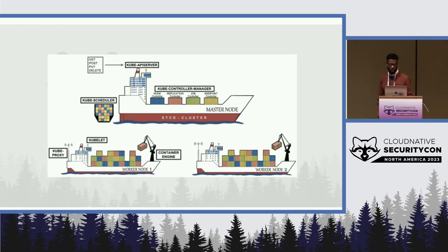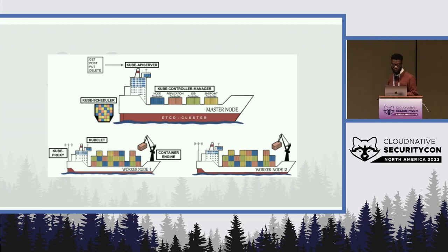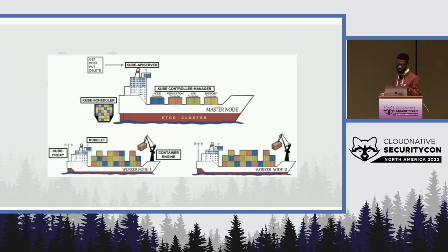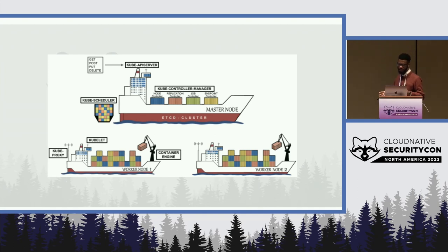This is just a basic overview of the features and architecture of Kubernetes. The master node is the control plane node of a Kubernetes cluster. It's responsible for maintaining the desired state and ensuring that the actual state matches the desired state.